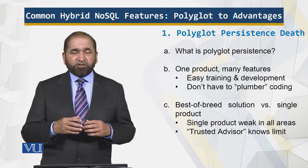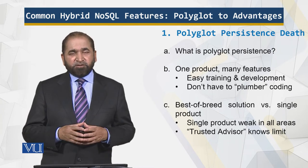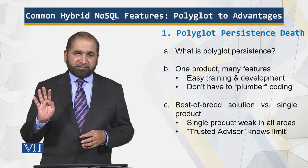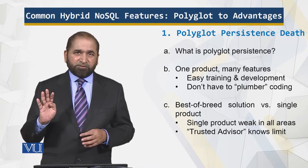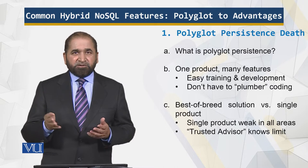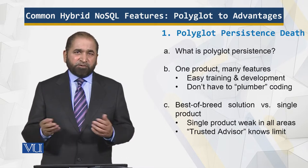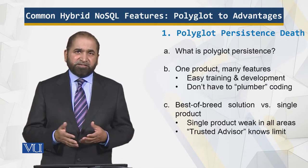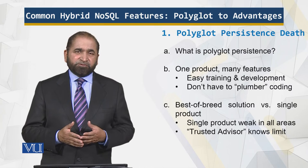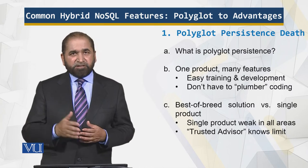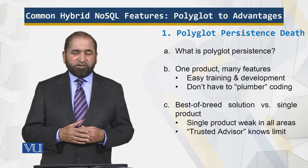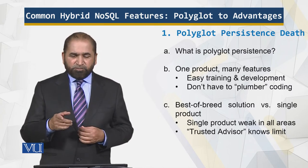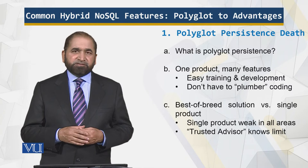With a NoSQL solution, which has four different types of data structures, there's no need to have polyglot persistence — that is already supported. So that is what is meant by the death of polyglot persistence: one product, many features.